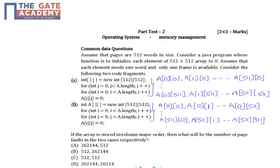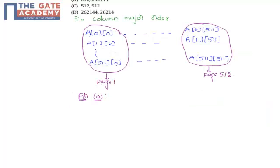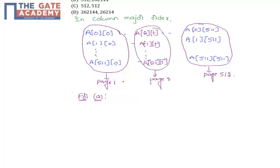This is one page fault because one frame is available and initially nothing is in memory, so we get it from secondary memory. Then A[0][1], A[1][1], up to A[511][1] are all stored in page 2 — one more page fault. So for every column we need one page, giving us 512 page faults total for Code Fragment A.